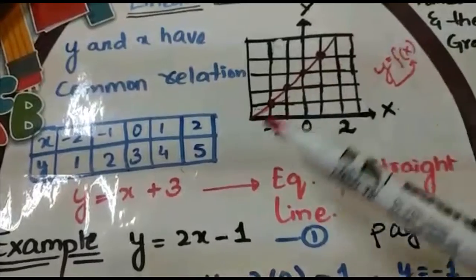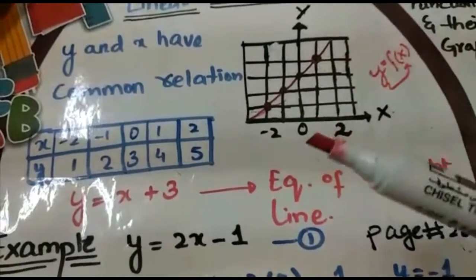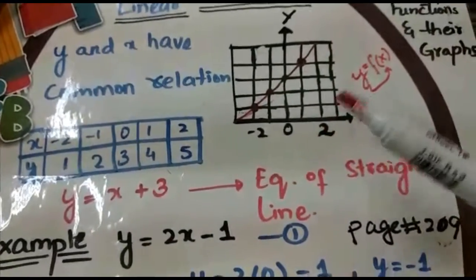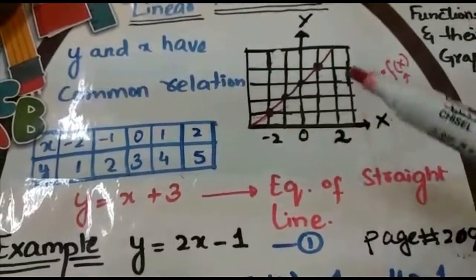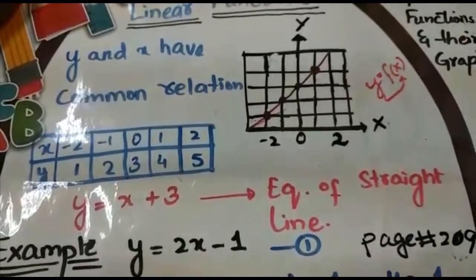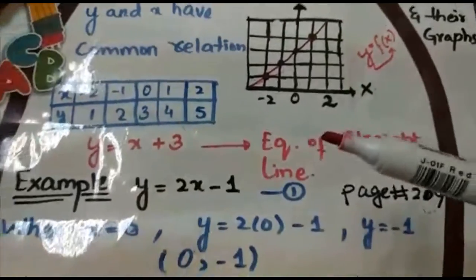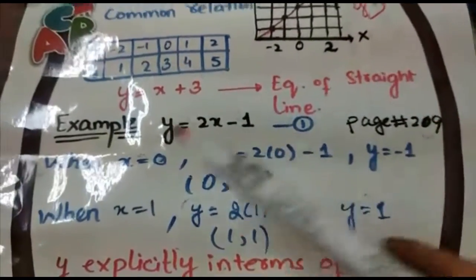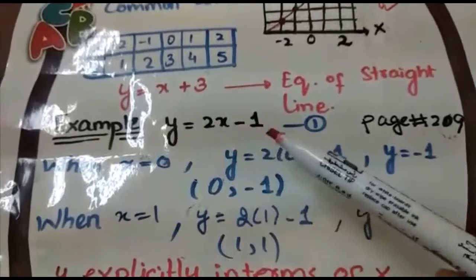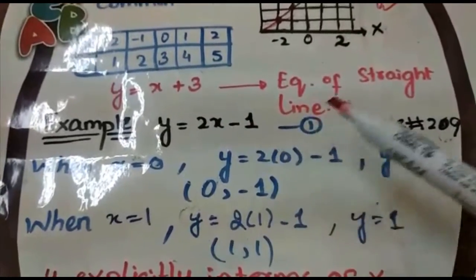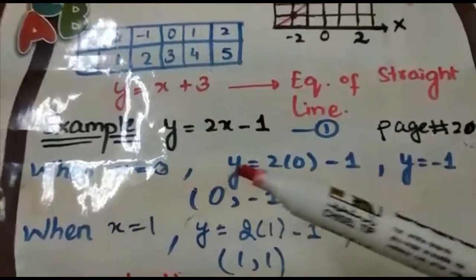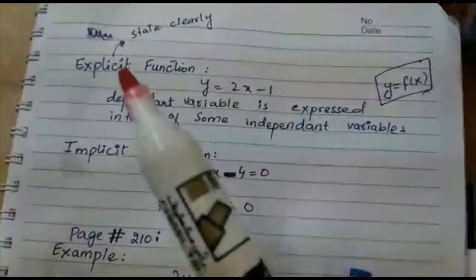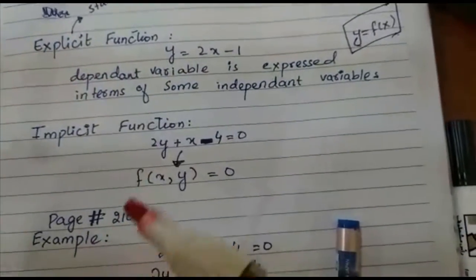This equation represents the equation of a straight line. Now you have to take graph paper, draw this on your notebook, and paste the graph paper in your notebook. At page number 209 there is an example: y = 2x - 1. Before explaining that example, I have to show you two types of functions.